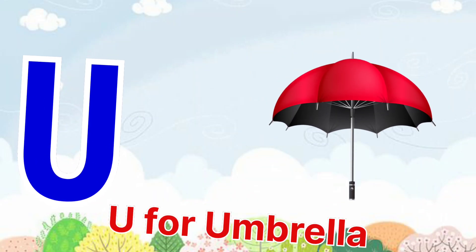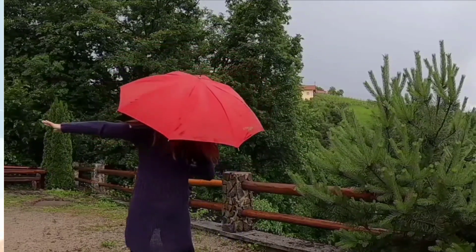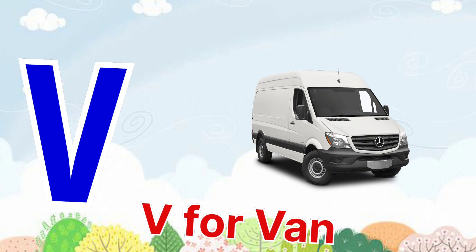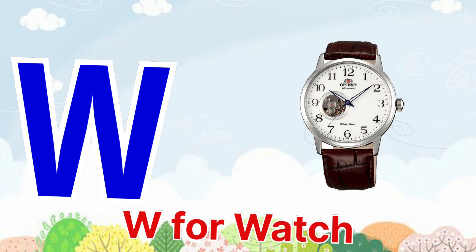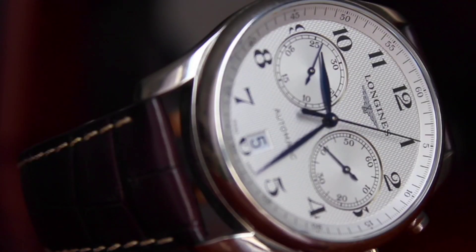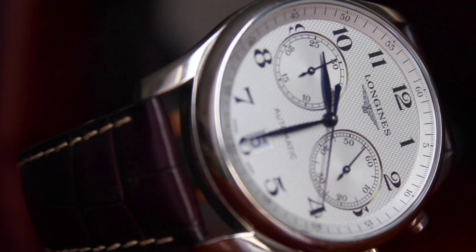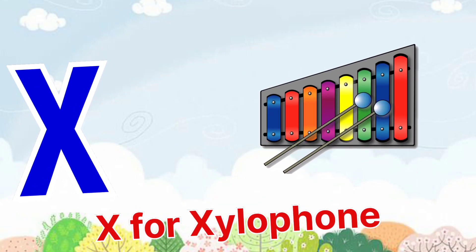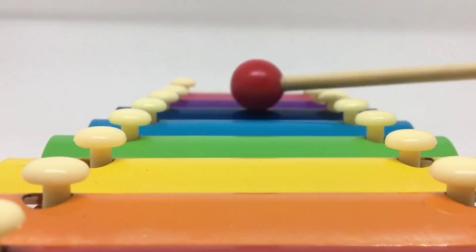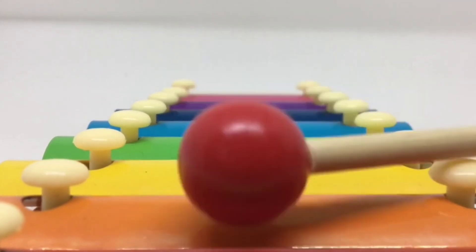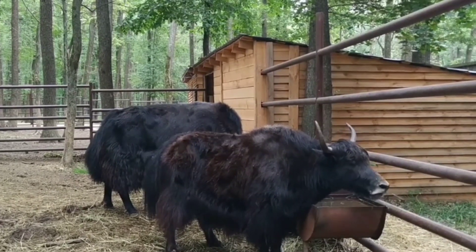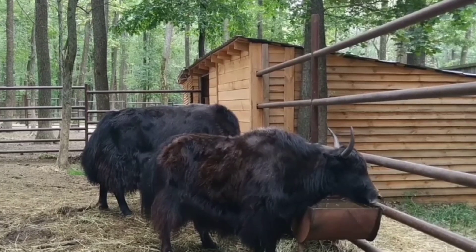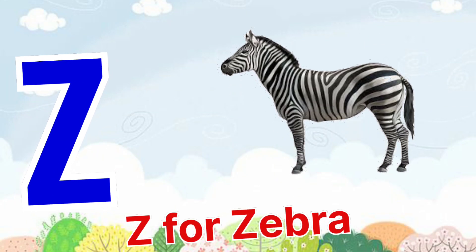U for Umbrella. V for Van. W for Watch. X for Xylophone. Y for Yacht. Z for Zebra.